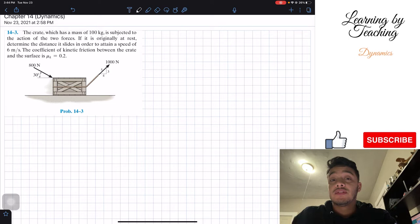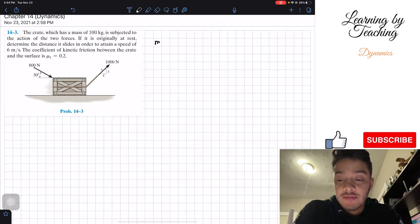The first thing I like to do in these problems is write down my givens. So first I have that my mass is equal to 100 kilograms. Then we are told that this crate is at rest, initially.